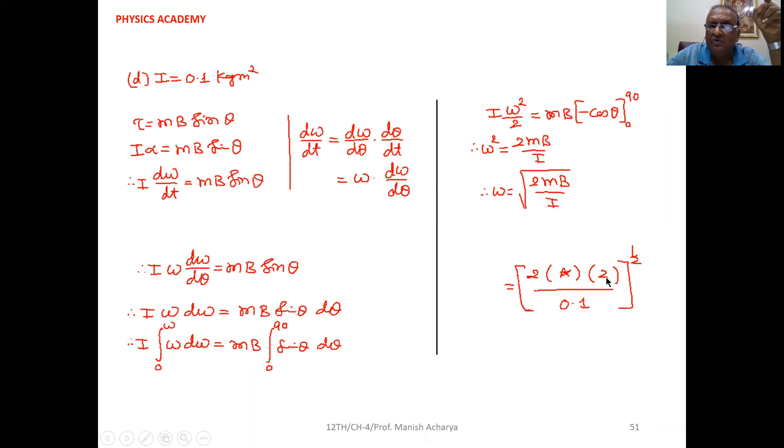Under root 2, M that we calculated in question B, substitute its value. B is given to you, 2 tesla. Moment of inertia is given to you, 0.1. Solve this one and you will get ω this much radian per second.